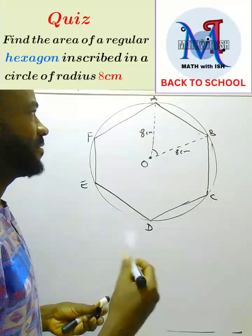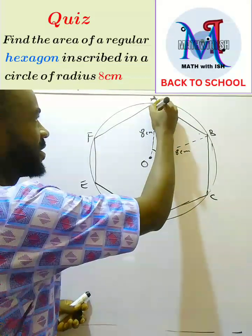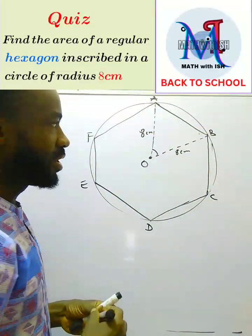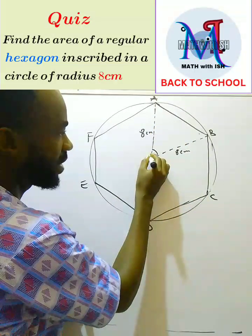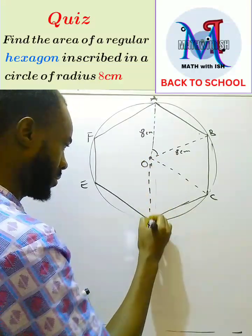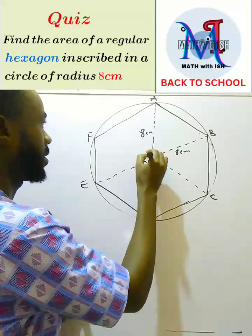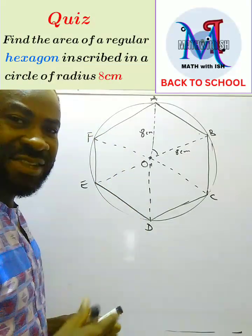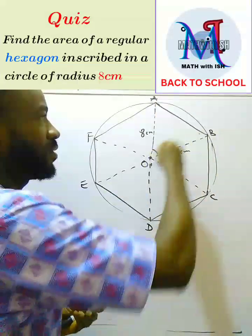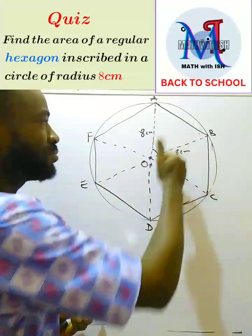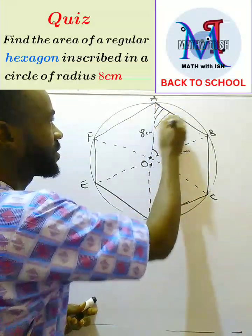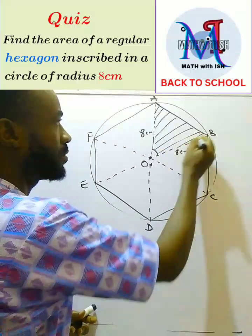All I need to get first is the area of this triangle AOB. Do you know why? Because if I create more radii, I'm going to get six of this sector. I'm going to get six of them.